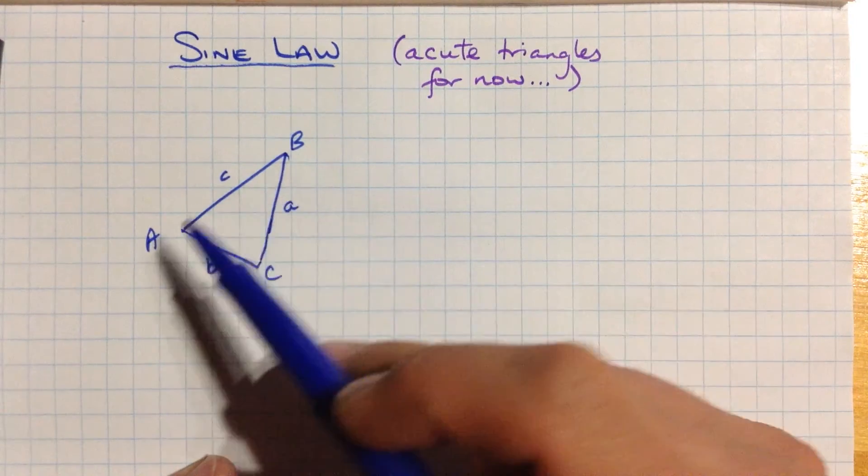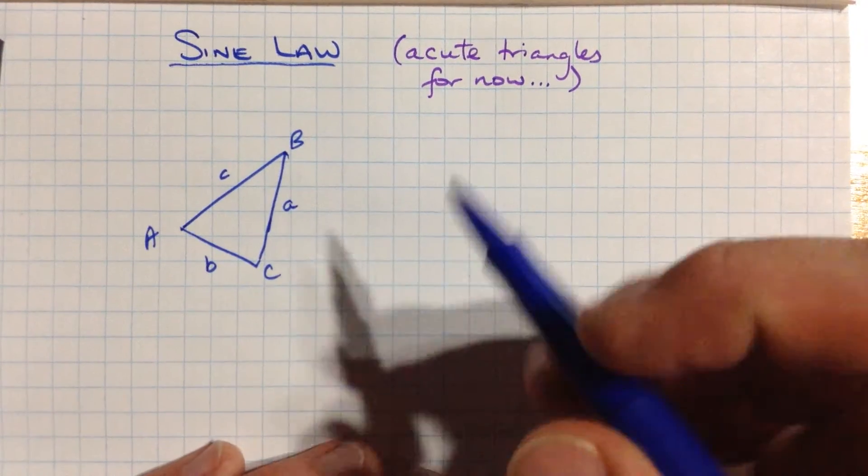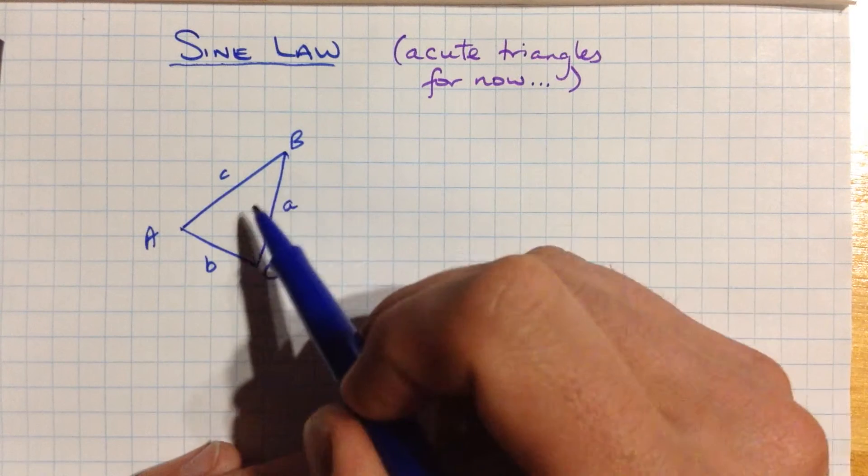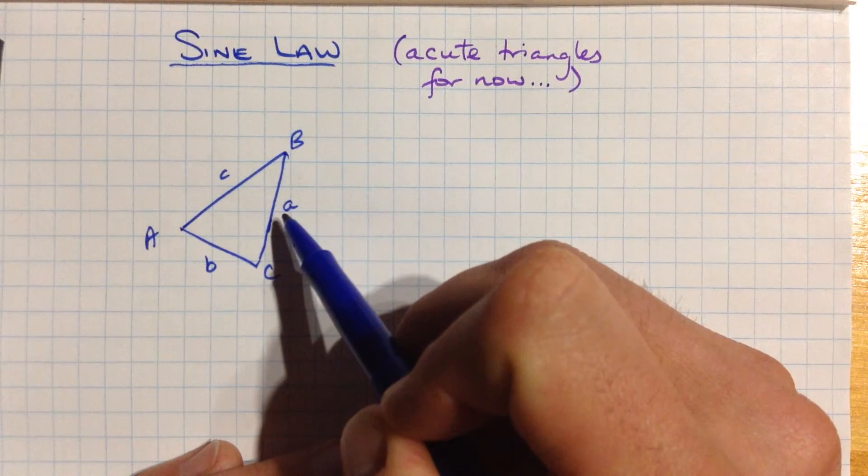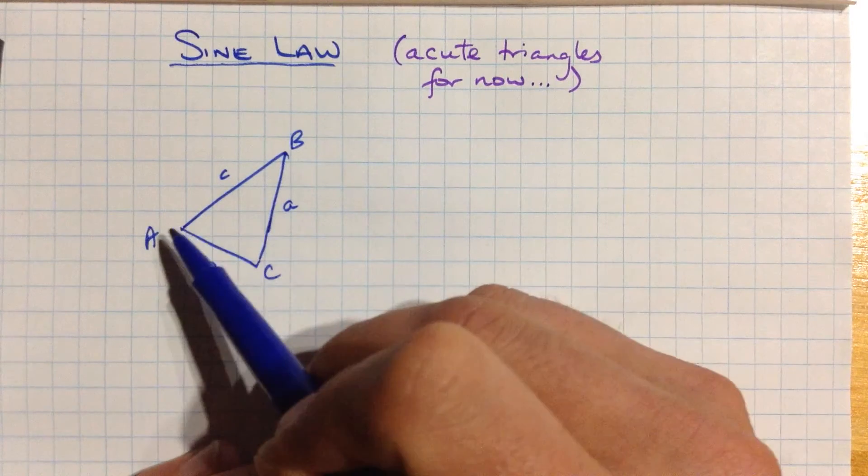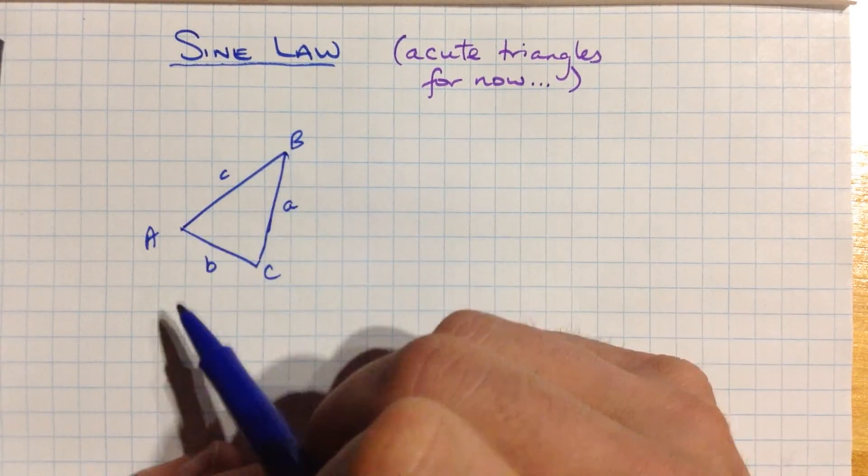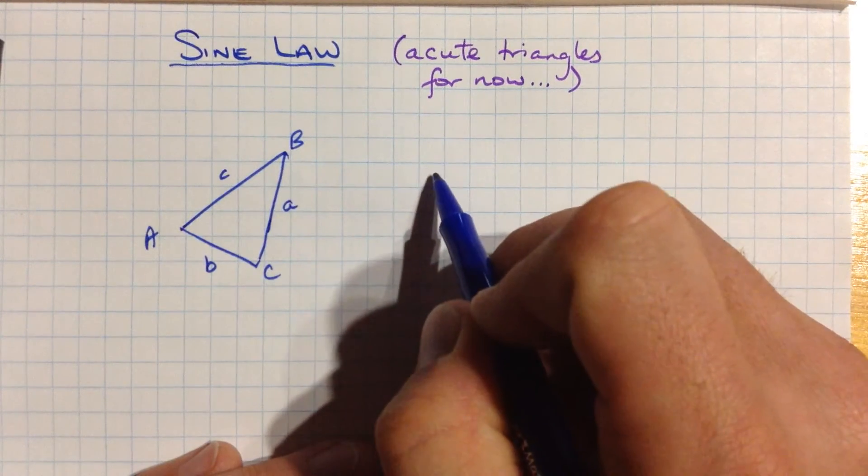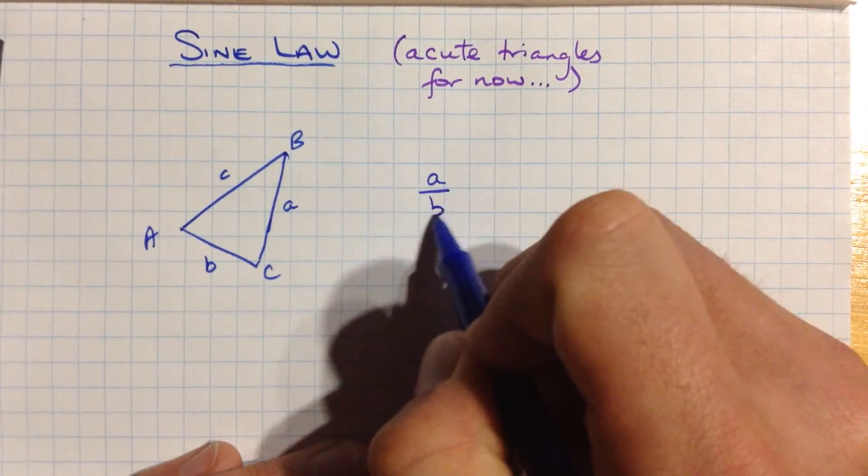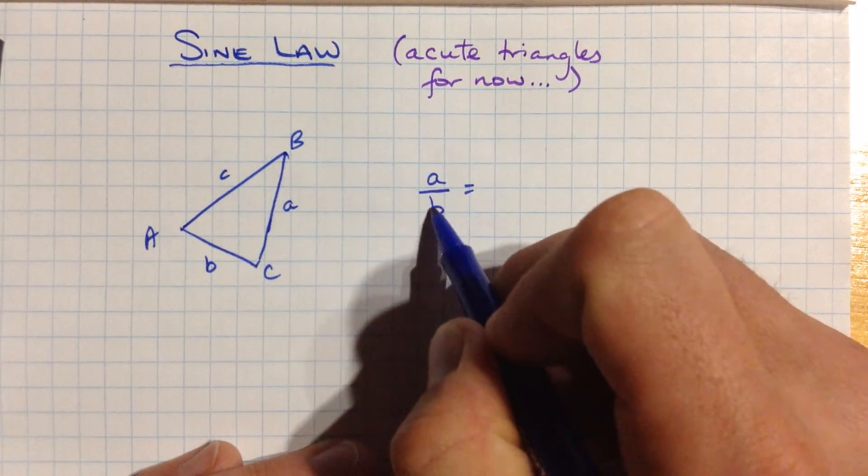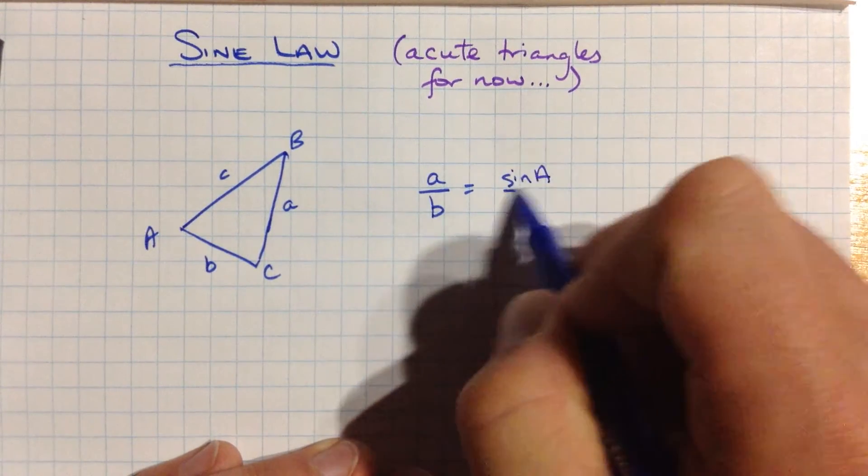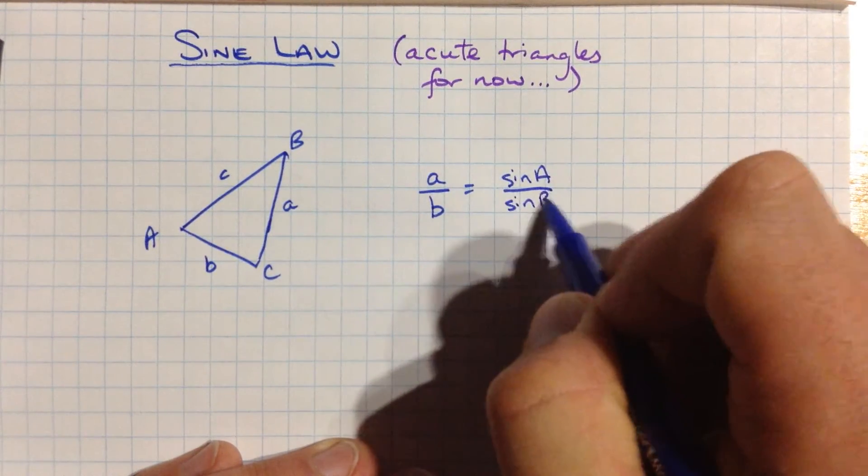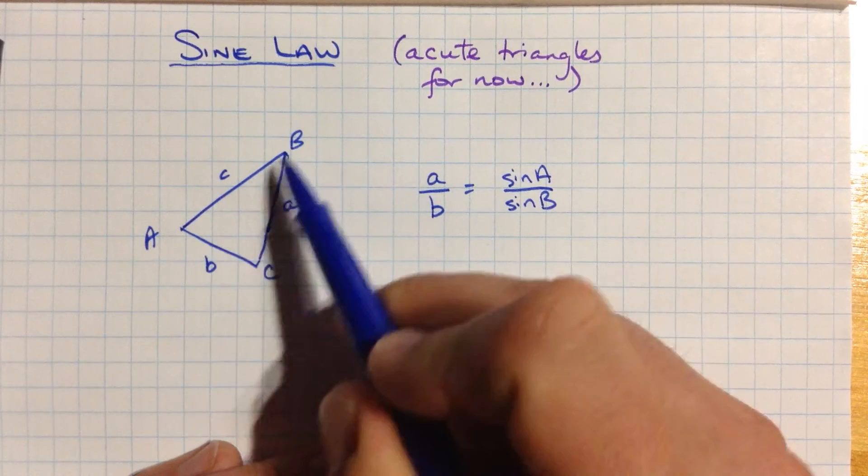So we label opposite sides with the same letters as the opposite angles. And what we have is that if we take a ratio of two sides, it's the same value. That ratio is the same as the ratio of the sine of the opposite angles. So one way to write that would be, for example, if I had a and b, a over b, a divided by b, that ratio is the same as sine of big A over sine of big B, the opposite angles.